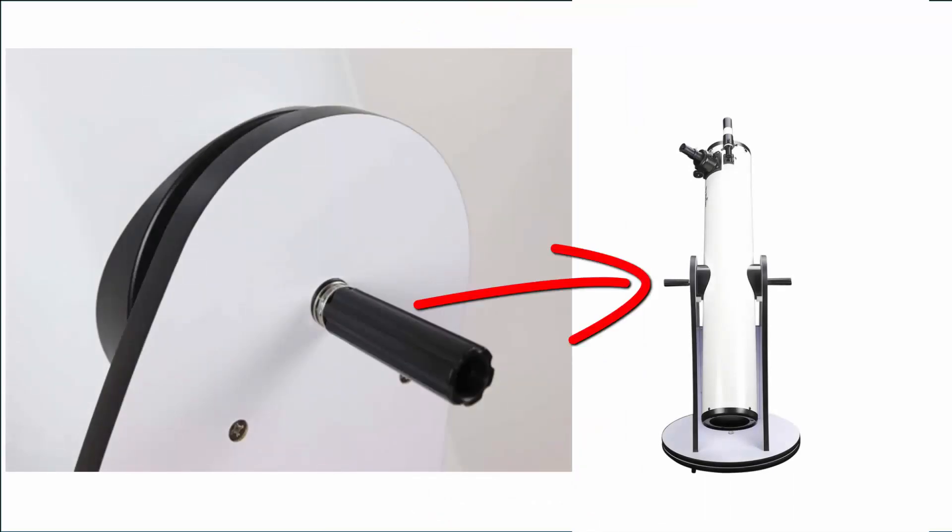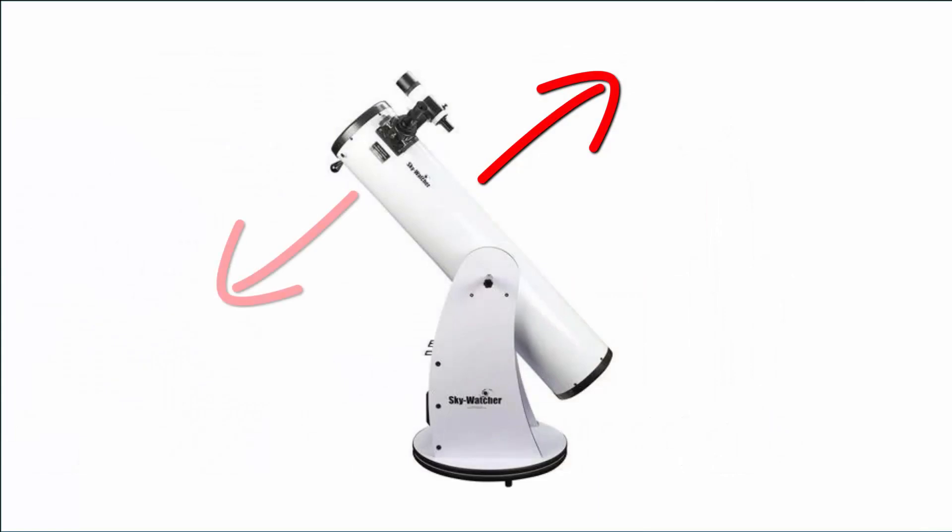Screw in the two tensioning bolts to secure the optical tube to the base. Tighten the bolts just enough to create a little bit of resistance in the up-down movement of the tube. Too tight and you can't move the tube, and too loose and it will bump up or down at the slightest touch.